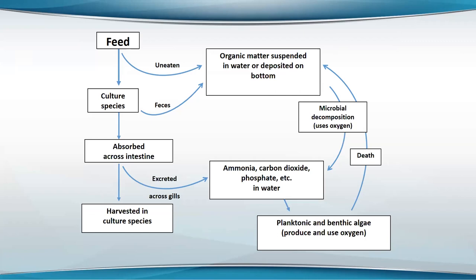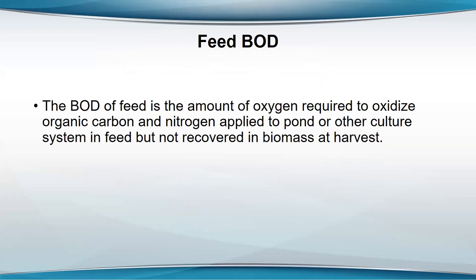When you put aeration in and that aerator transfers a kilogram of oxygen to the water, not nearly a kilogram of oxygen is available to the fish or the shrimp. You can think of this in terms of the biological oxygen demand — the BOD — which is the amount of oxygen it takes to oxidize the organic matter in waste.